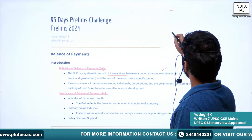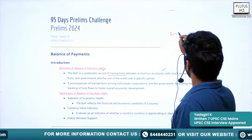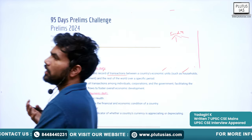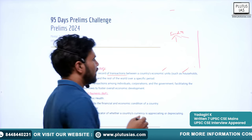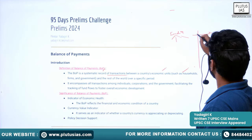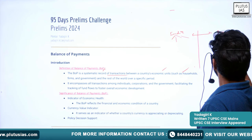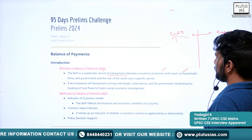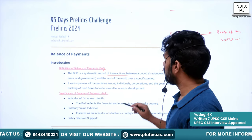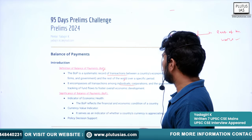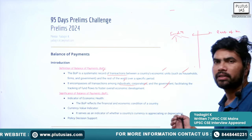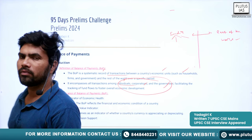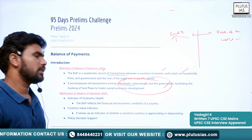The definition of balance of payments: it is a systematic record of transactions between a country's economic units — such as households, firms, and governments — and the rest of the world. The transactions include transactions among individuals, corporations, and even between governments. These are all the actors involving in the transactions between India and the rest of the world.